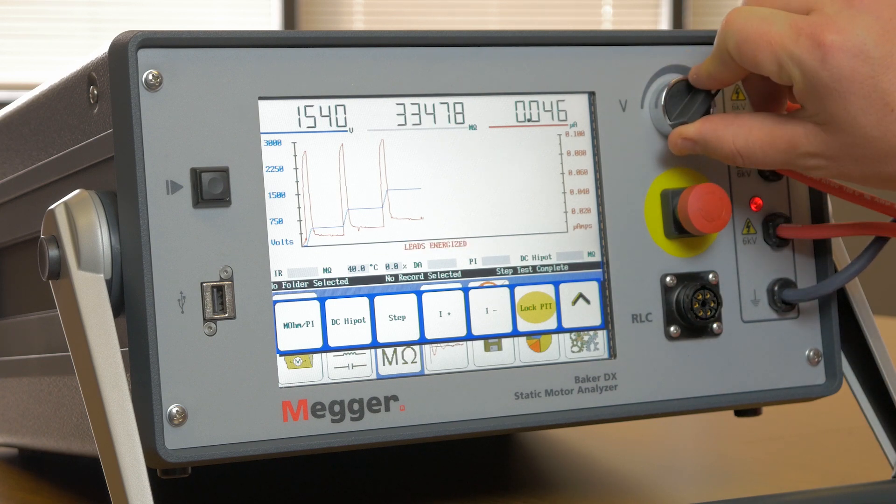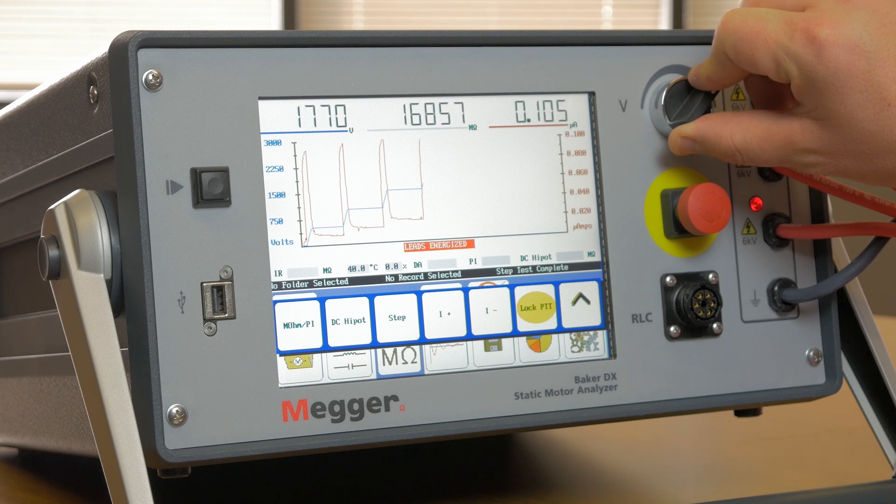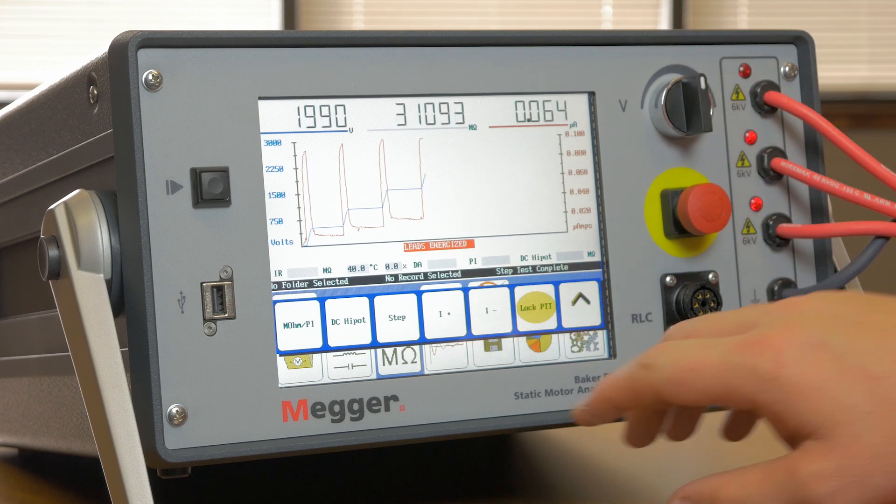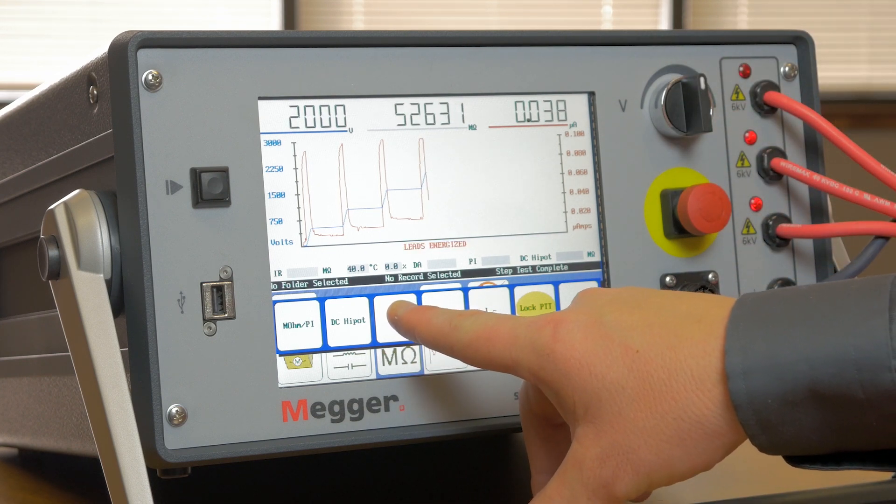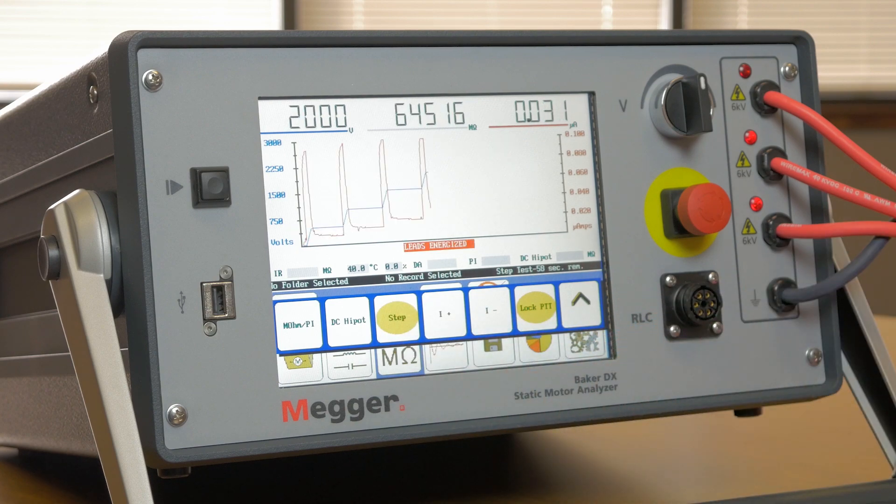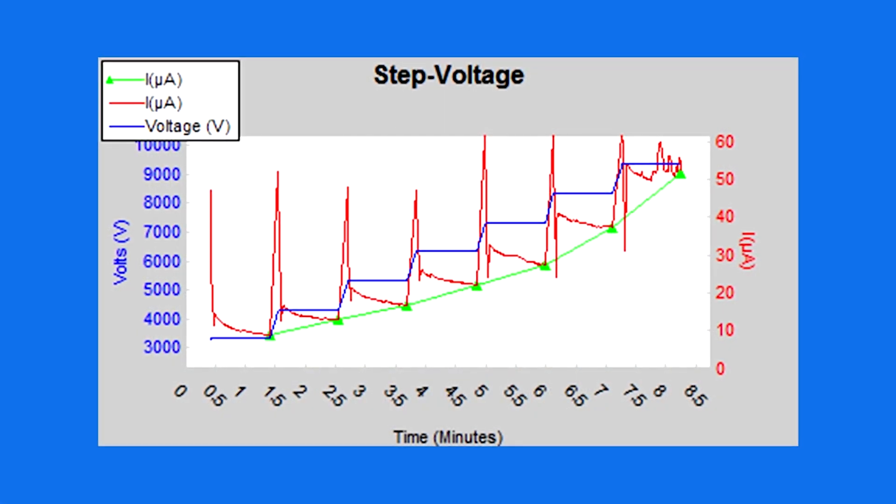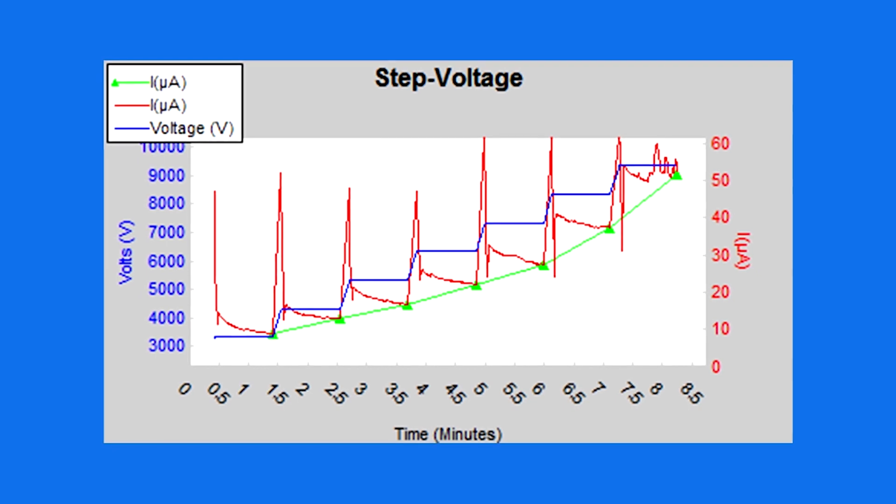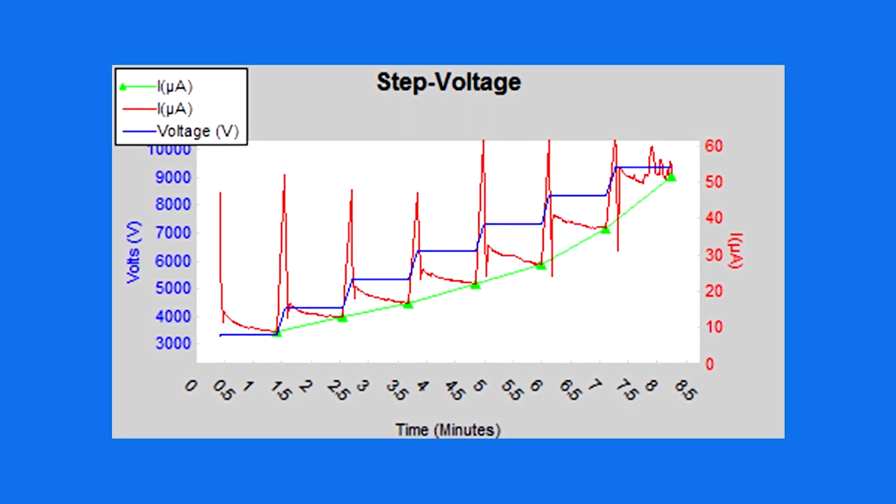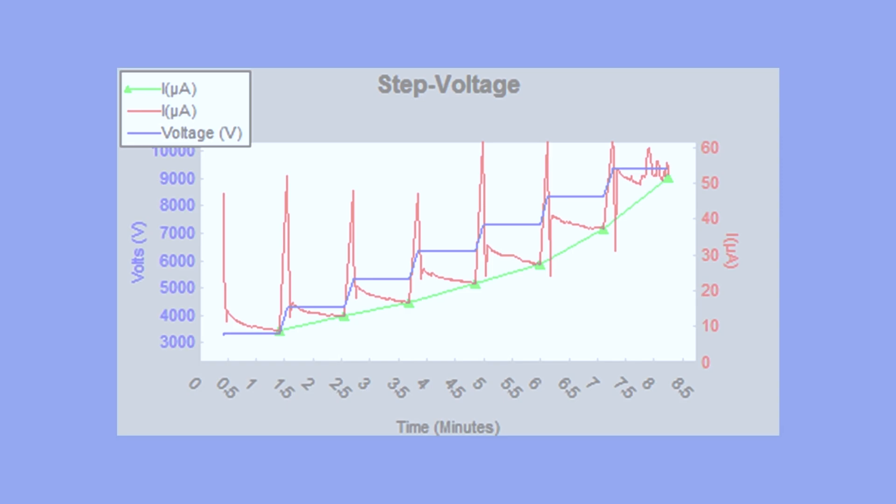To detect the non-linearity of weak ground-wall insulation, a higher-than-operating voltage is applied, but the voltage is applied as a steady ramp or in steps up to the final test voltage. Baker Static Testers plot the voltage applied and the resulting current flow. Where the ground-wall insulation is weak, the current will rise much more quickly than the voltage. This is the most complete test of ground-wall insulation.